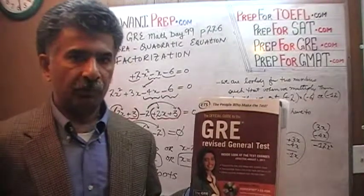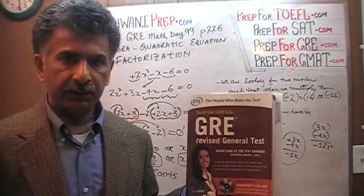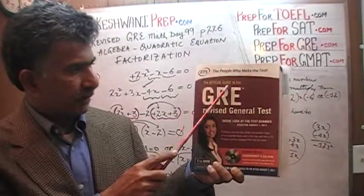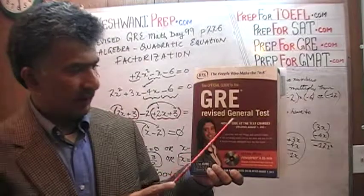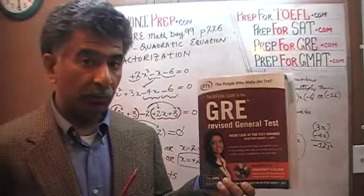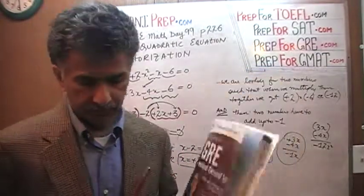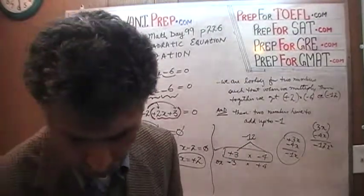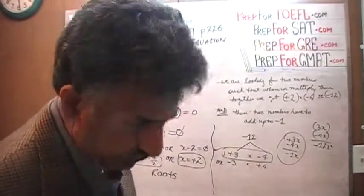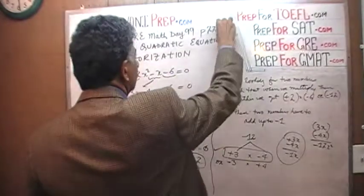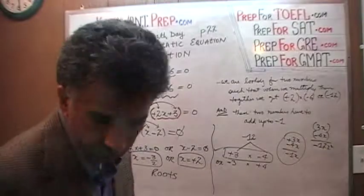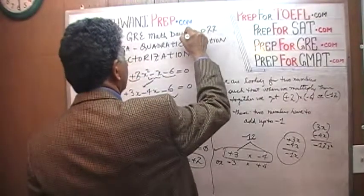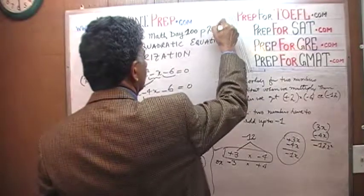We are here because we want to prepare for the GRE. We have been solving GRE math problems out of this book, the official guide to the GRE revised general test. If you do not own this book already, purchase one immediately — you are going to need it. The problem we are about to solve is on page 227. Today is our lesson number 100.